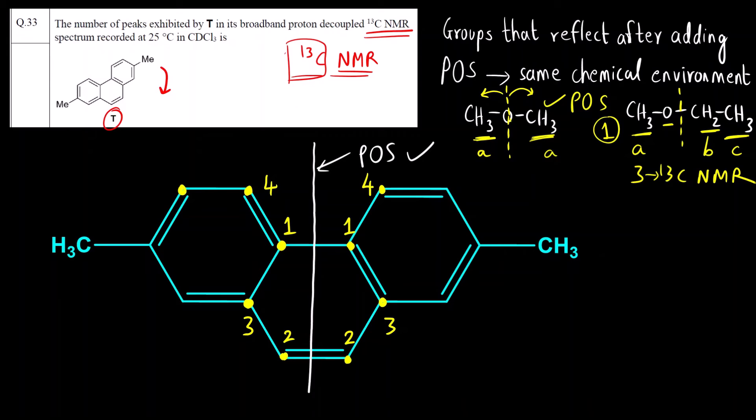Then this carbon and this carbon are also reflecting. This will be 5. In this row again, this is reflecting with this carbon. So 6. Then there is this carbon, 7. And there is this 2 methyl groups which are reflecting each other. It will be 8. So total there are how many signals? 8.